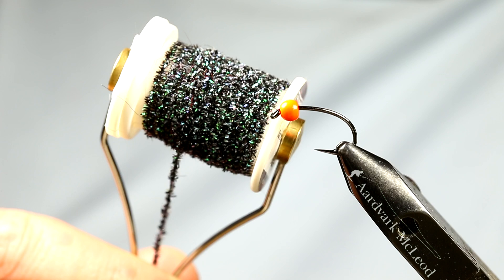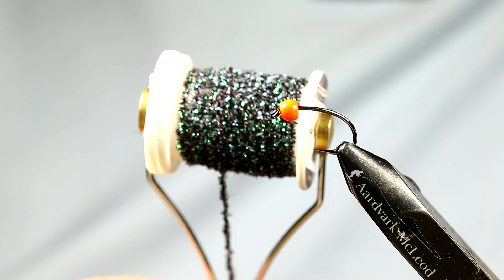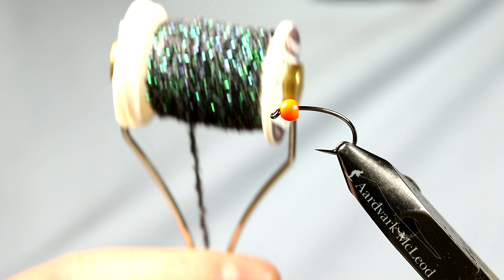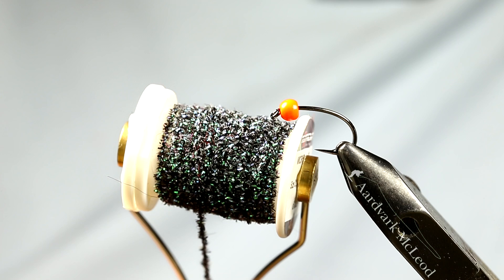I'm using a pretty fluorescent orange tungsten bead on the front. The size of the hook is a size 8. The size of the tungsten is a 4mm tungsten bead. You can tie these all the way from perhaps a size 6 down to a 14 and then just vary the size of the bead accordingly.